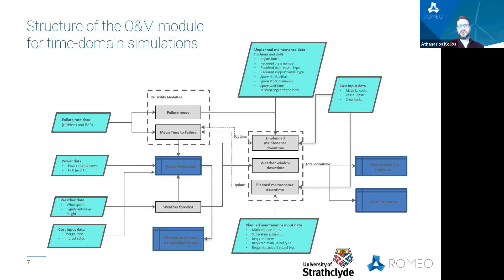The reliability module is further divided into the mean time to failure, namely the uptime of the asset estimation, and the mean time to repair estimation throughout the maintenance operations. The mean time to repair calculation is based on the annual failure rates, while the maintenance operations, both planned and unplanned, require data related to the resources required for the repairs. The time to repair is calculated in the maintenance main module, and is used as input in the reliability module.